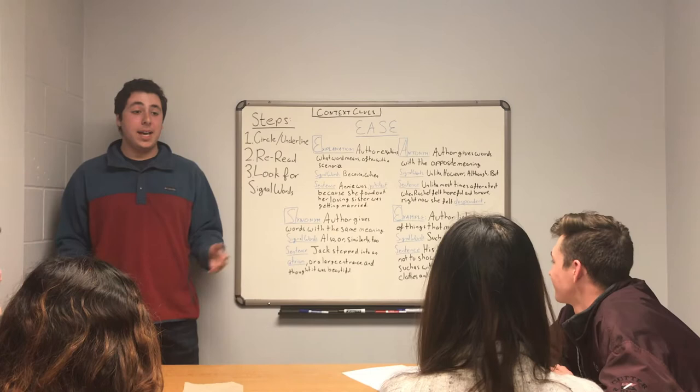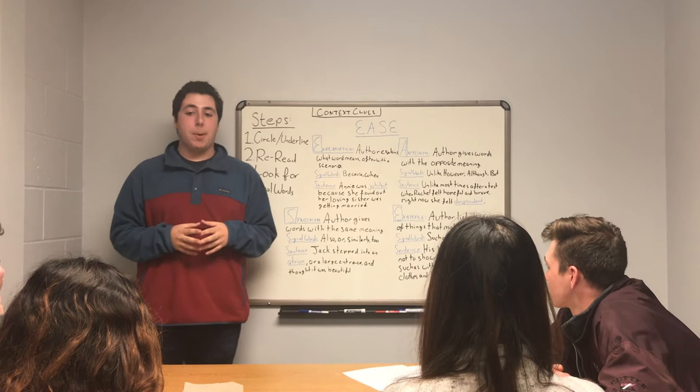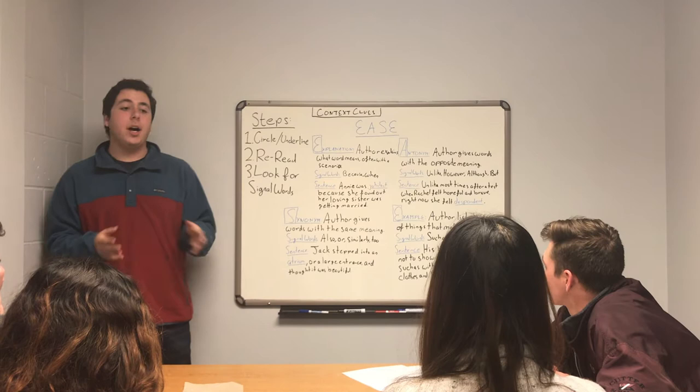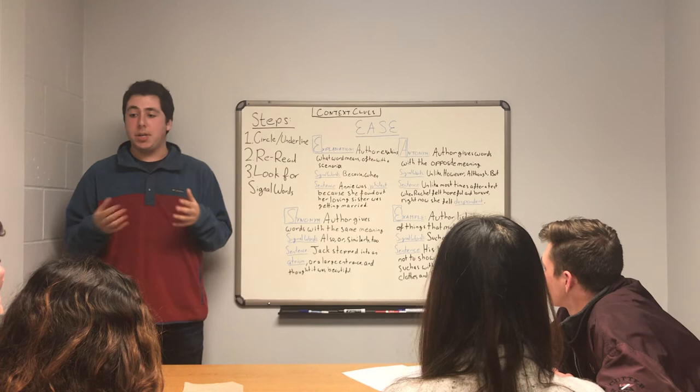Hi guys, my name is Josh Miller and today we're going to be continuing our unit on reading tools. Today we're going to talk about an issue that a lot of you guys have, which is when you're reading a text, you come across a word you don't understand and you don't have a dictionary around. So we're going to use something called context clues — using the information the author gives us in the text to help us understand what a word means without a dictionary.